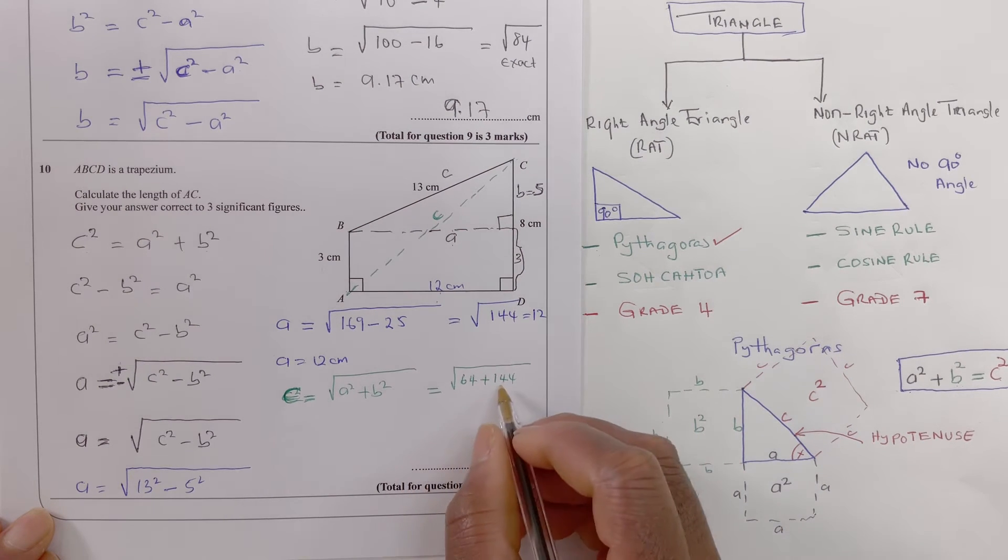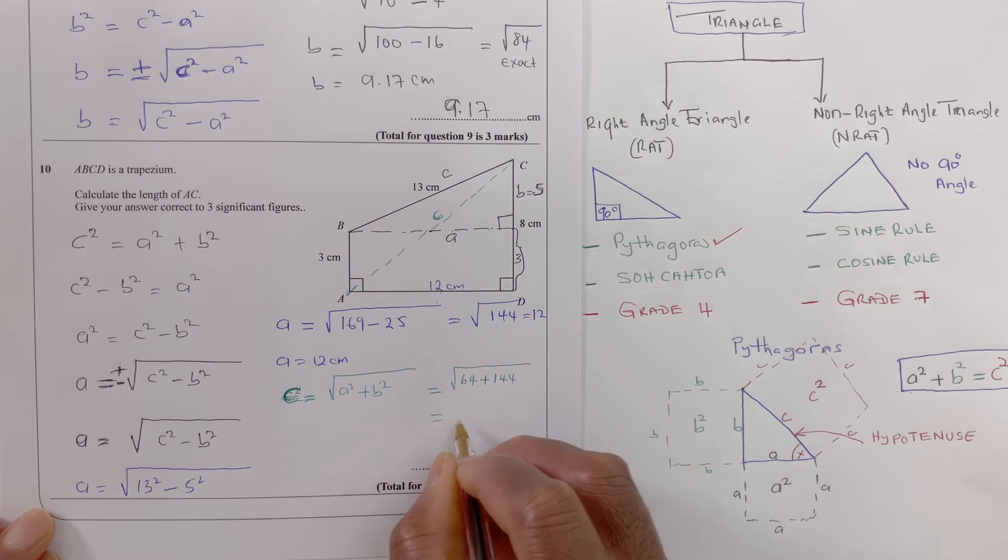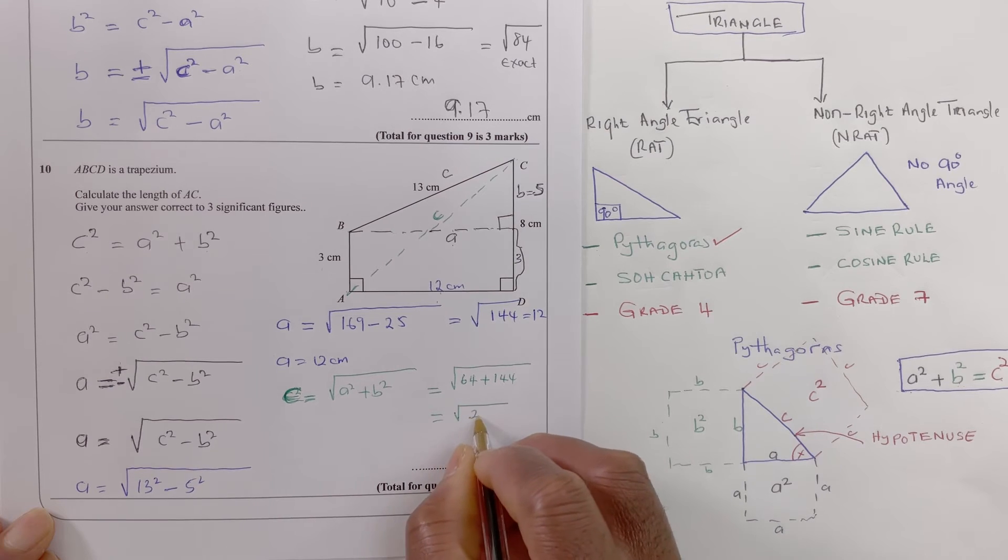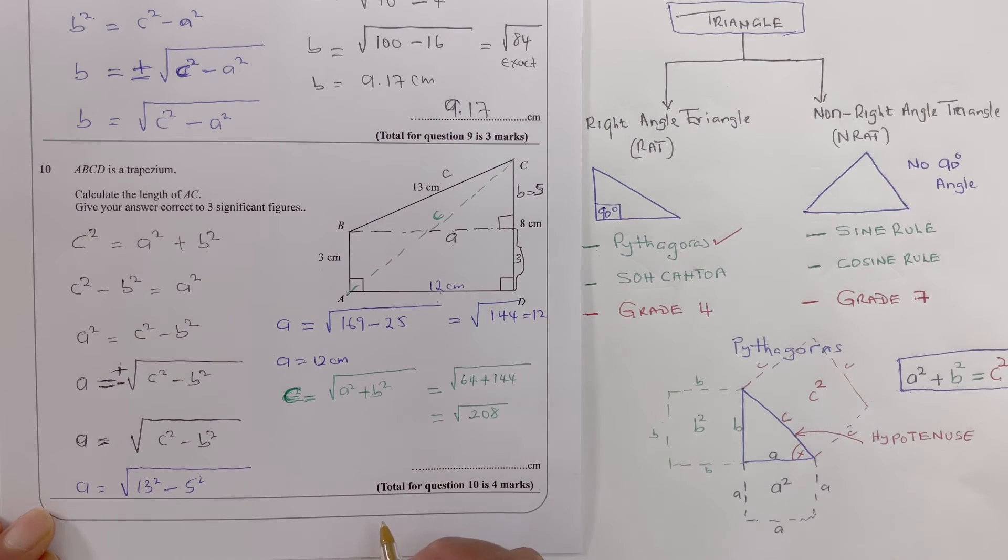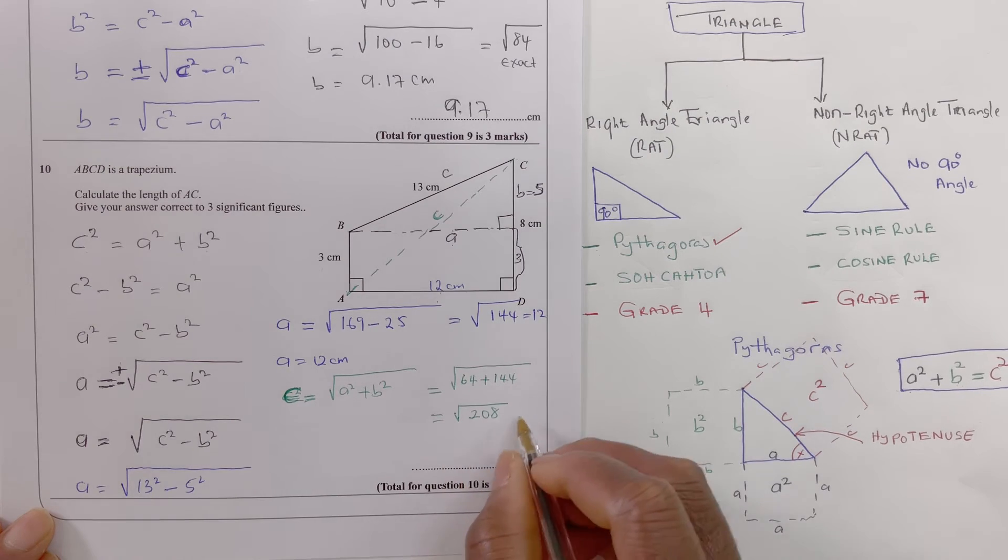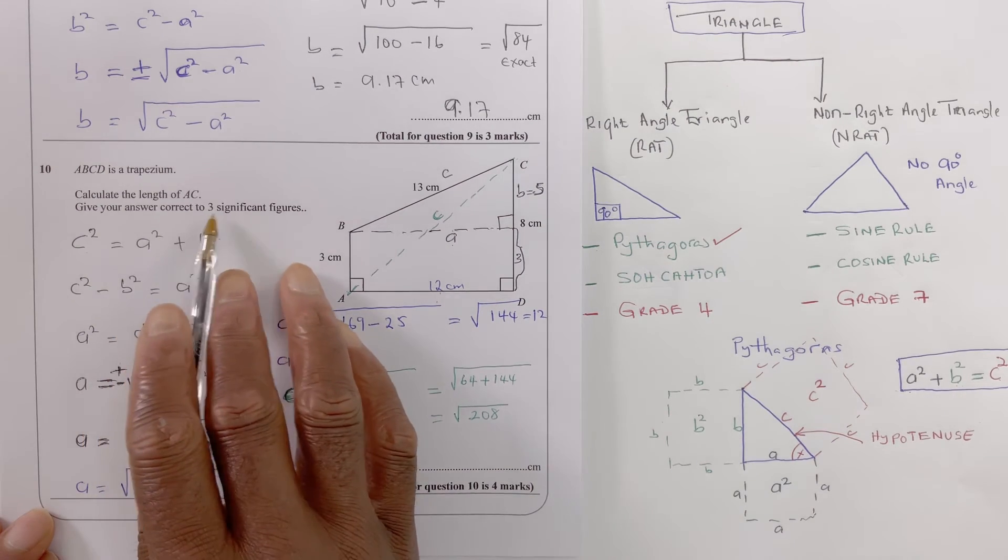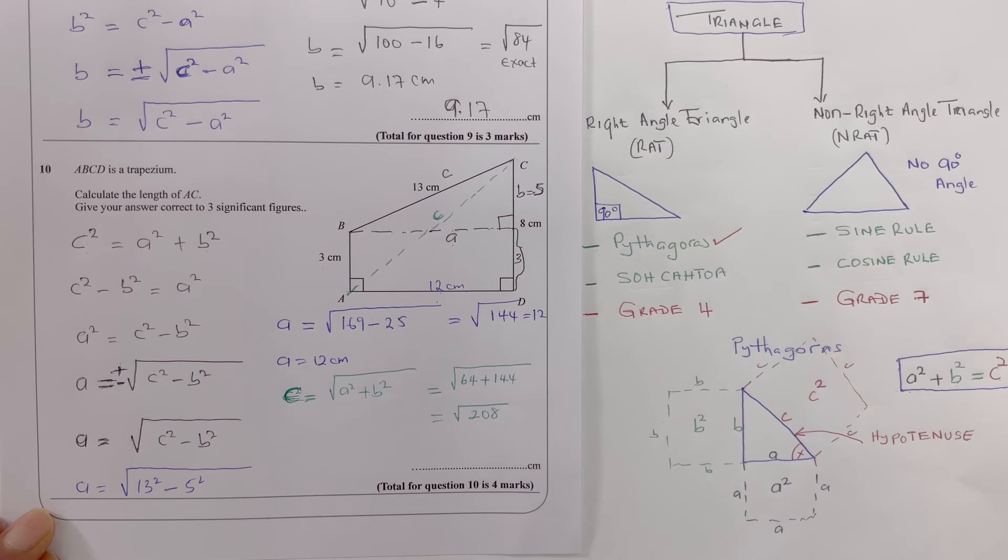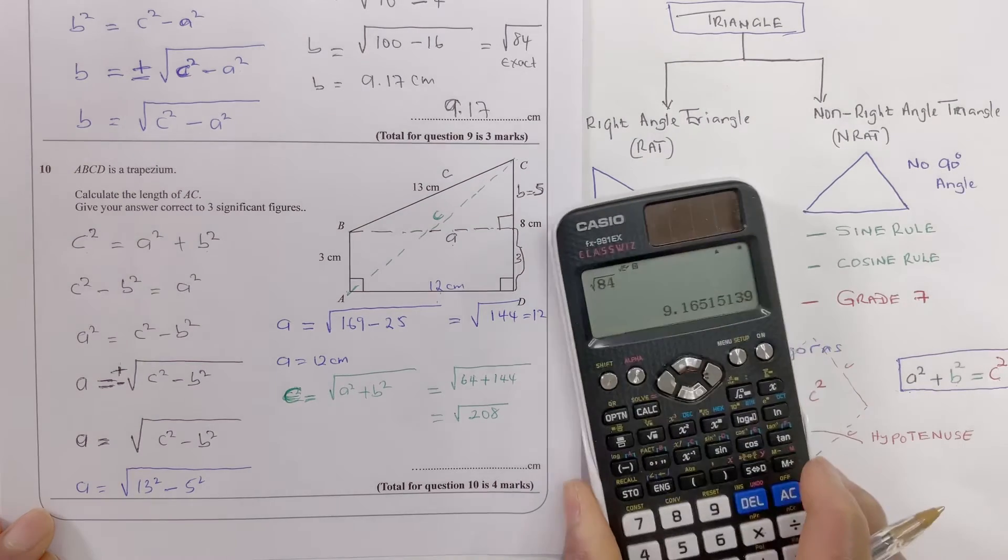Right, 64 plus 144 is root 208. Right so root 208 and we want that in three significant figures. So what I need to do is bring my calculator in there.